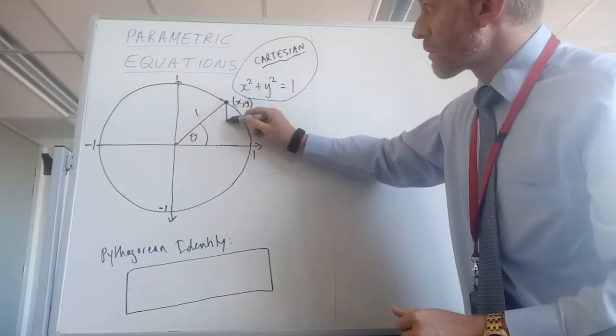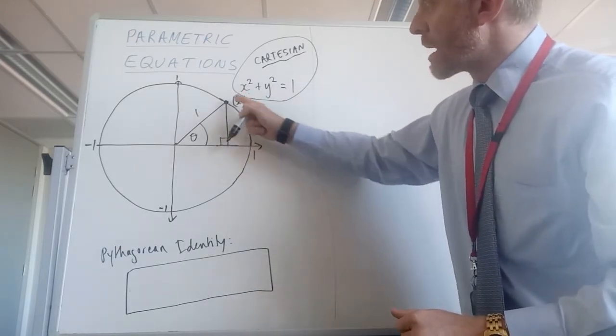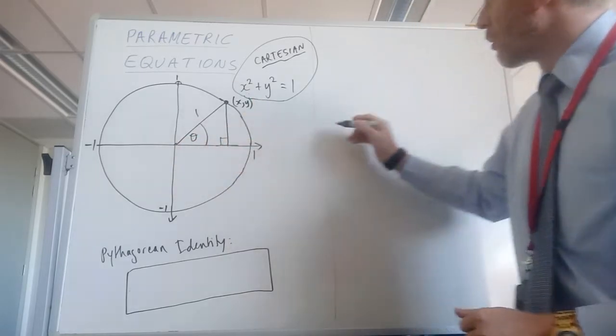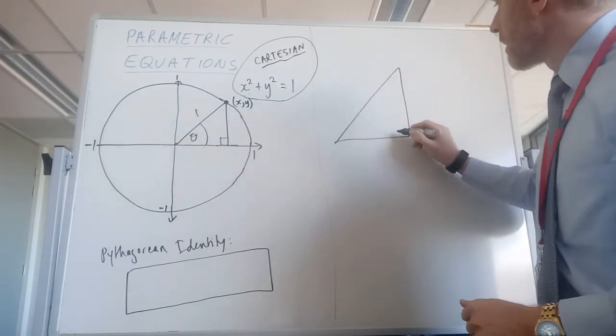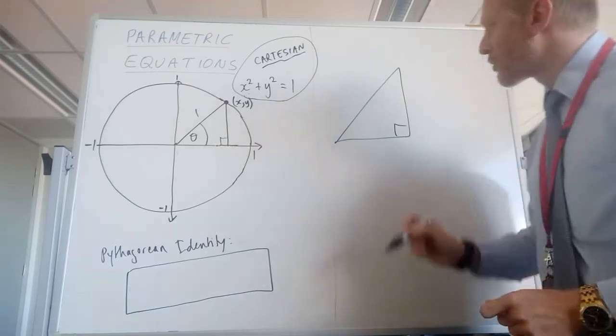Let's draw in and make a right angle triangle there. I'll draw it over here as well. Now, think about that triangle.